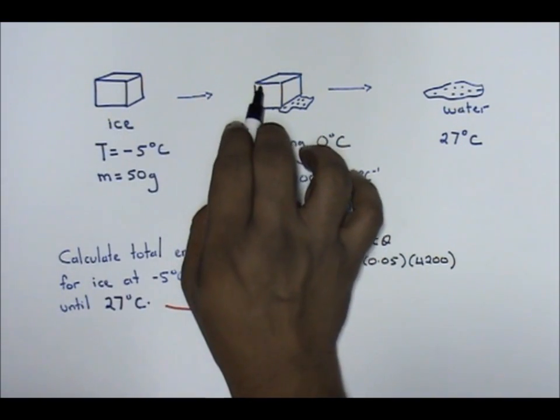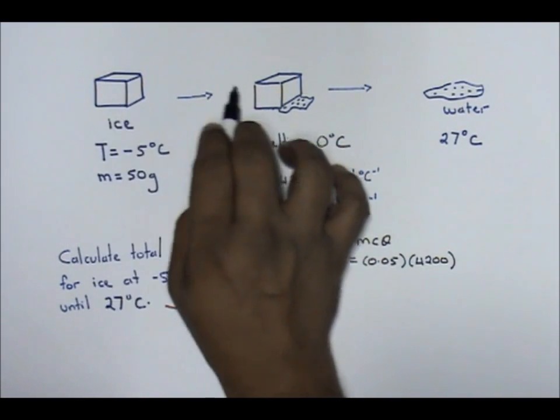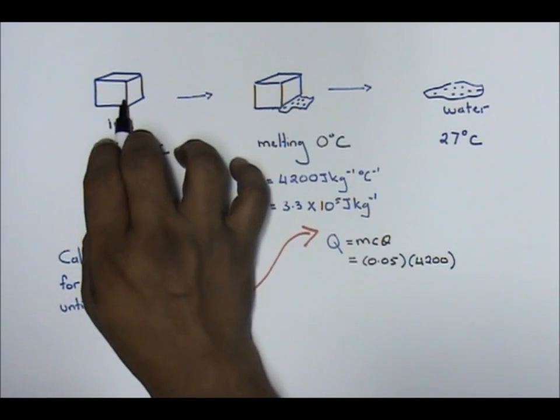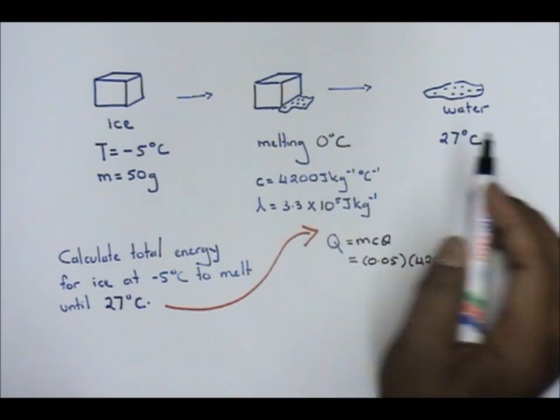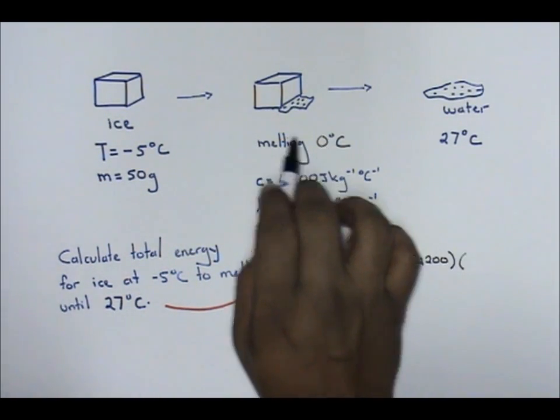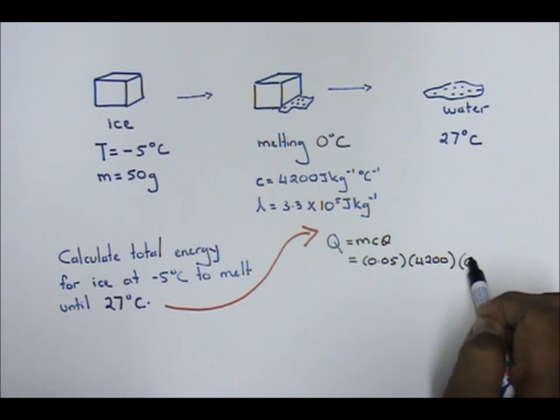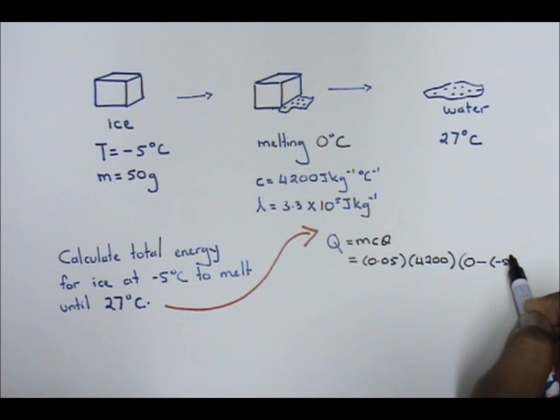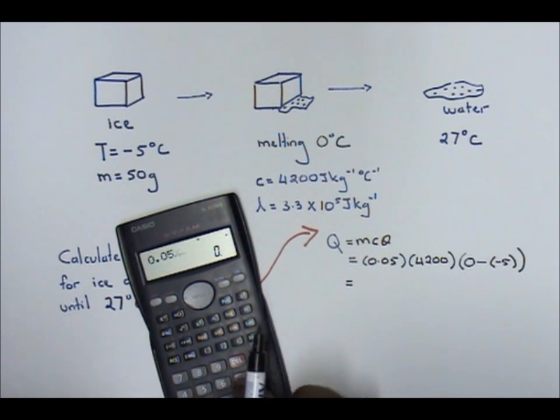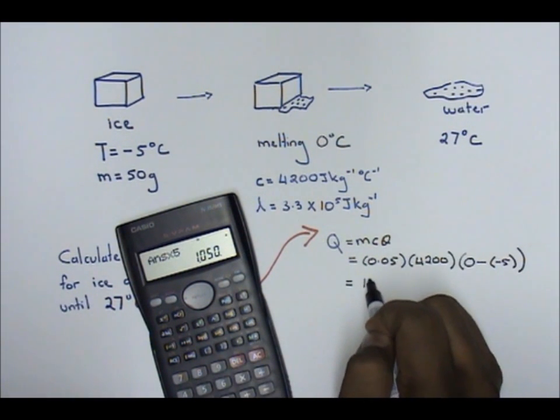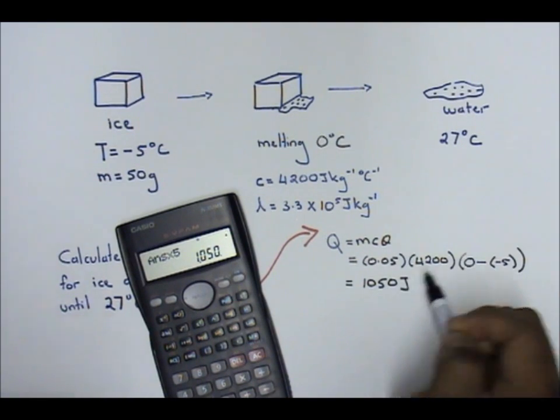From negative 5 to 0 degree Celsius, I want to know how much heat is being absorbed. There is no change in the state of matter. It's just from ice to ice again, but starting to melt at 0 degrees. So 0 minus negative 5. Calculate: 0.05 times 4200 times 5. Total energy involved: 1050 Joules.